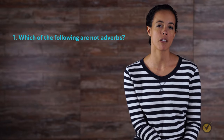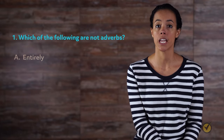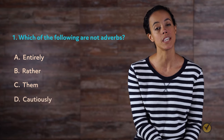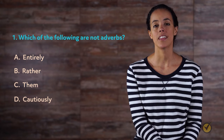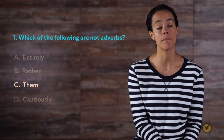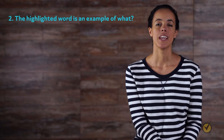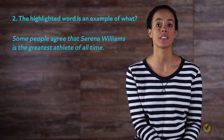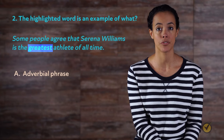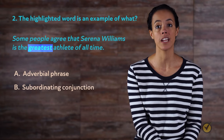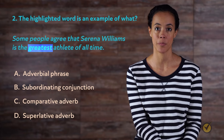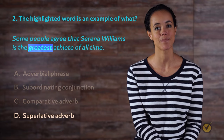Let's do a little practice. Which of the following are not adverbs? A, entirely. B, rather. C, them. Or D, cautiously. The answer is C, them — the word them is a pronoun. Number two: the highlighted word is an example of what? Some people agree that Serena Williams is the greatest athlete of all time. A, adverbial phrase. B, subordinating conjunction. C, comparative adverb. Or D, superlative adverb. The answer is D, superlative.